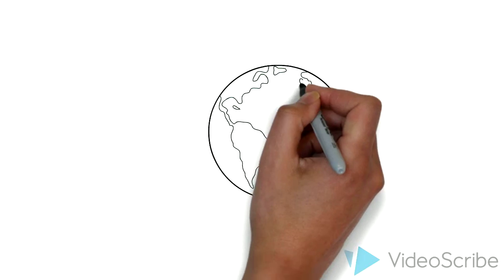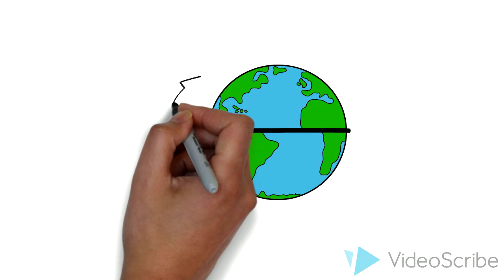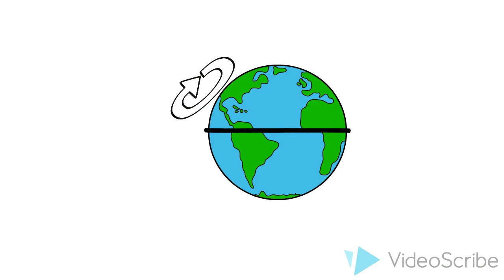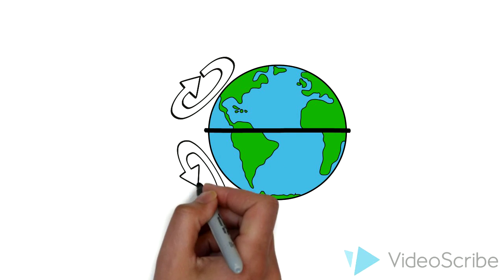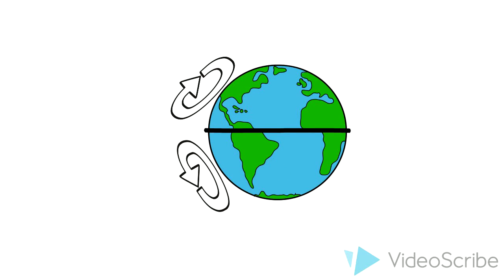The tropics receive more sunlight, therefore the air is warmer and it rises and is displaced towards the poles by the air that is rising below it. As this air travels towards the poles, it cools, and upon reaching the poles, it descends and becomes displaced towards the tropics.